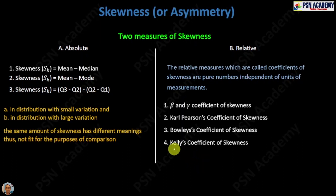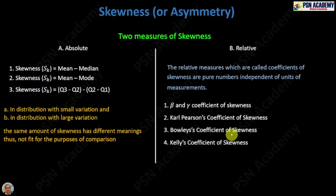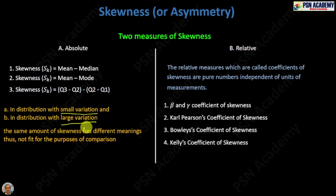In this video, we will learn about Kelly's coefficient of skewness, and this is the last relative measure of skewness in our list. In the previous videos, we discussed the beta and gamma coefficient of skewness, the Carl Pearson's coefficient of skewness, and Bowley's coefficient of skewness. We also discussed why we are learning these relative measures of skewness: because there is a problem with the absolute measures of skewness — in a distribution with a small or large variation, the same amount of skewness will have different meanings, which makes it difficult to compare the skewness of distributions.